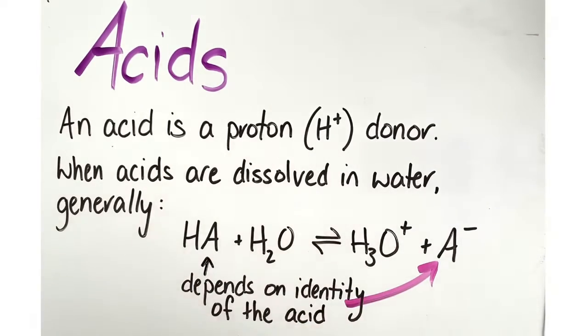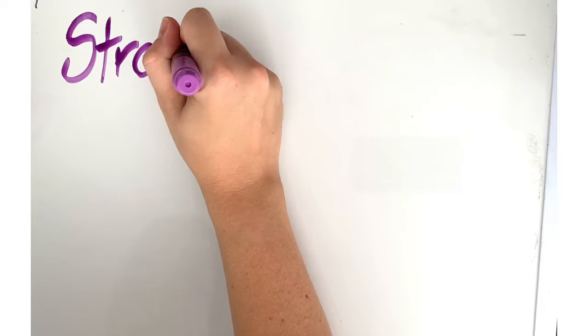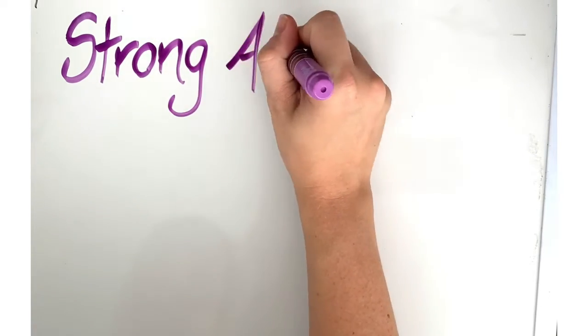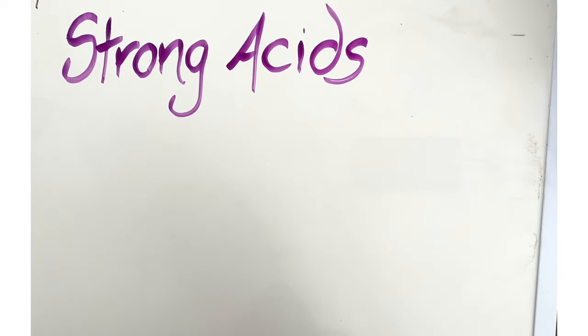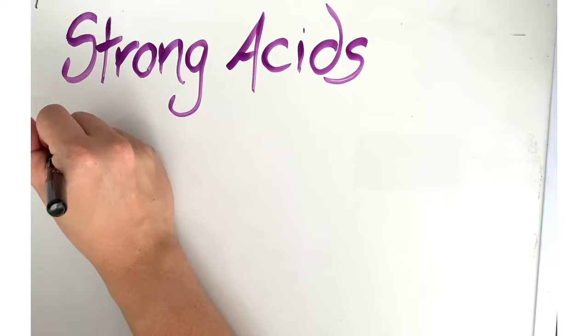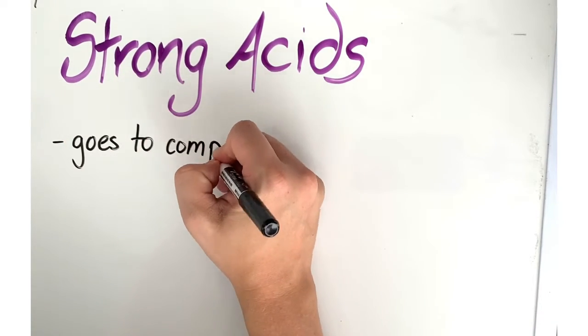Let's start thinking about what actually is a strong acid and what is a weak acid and how we are able to identify them. Generally these reactions where an acid is dissolved into water are reversible, but in some cases the acid is so good at giving away hydrogen ions that we can think of the reaction as being irreversible or going to completion.